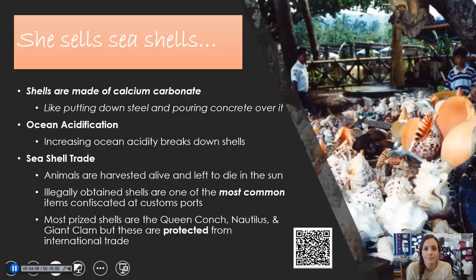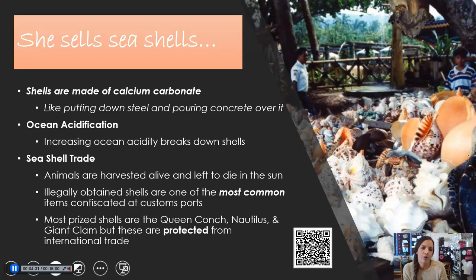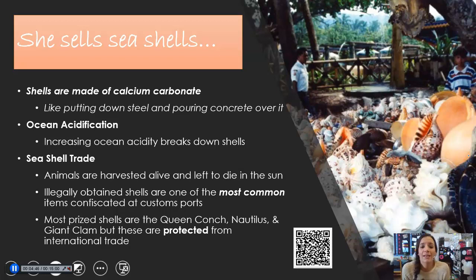So a little bit more about shells. Shells themselves are made of calcium carbonate. To kind of put that into perspective, it's like putting down steel and then pouring concrete over it — you have your support and then you pour your concrete to give that full effect, which is how the shell is also made. Going back to ecology and some of the human impact, ocean acidification is harming shells because it's breaking down that calcium carbonate with the excess acidity in the ocean water, and as a result, the mollusks die because they don't have a shell to protect them.